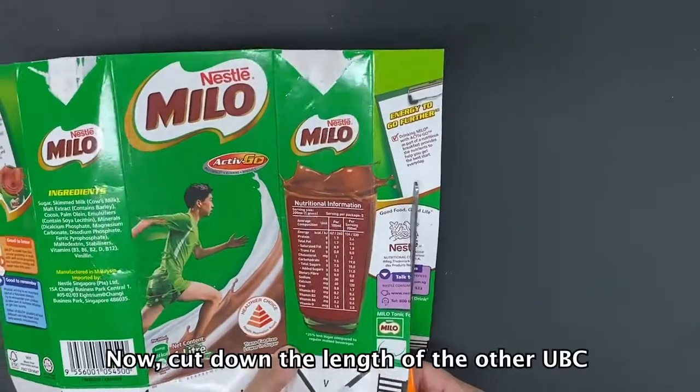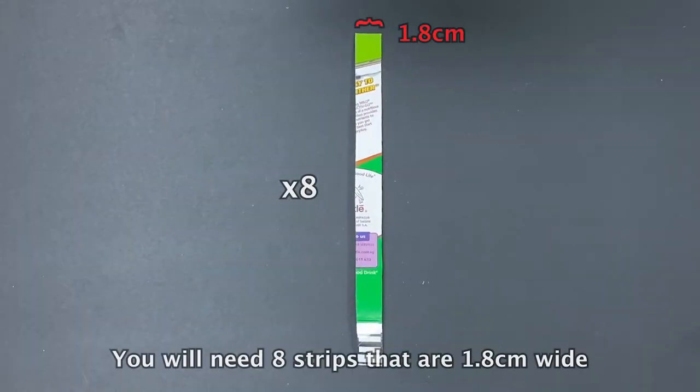Now cut down the length of the other UBC. You will need 8 strips that are 1.8 cm wide.